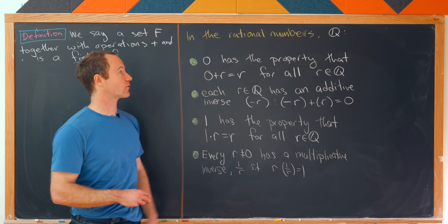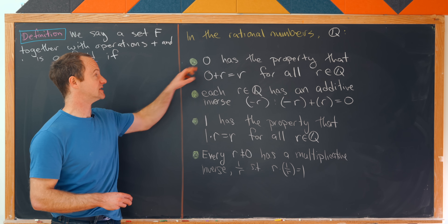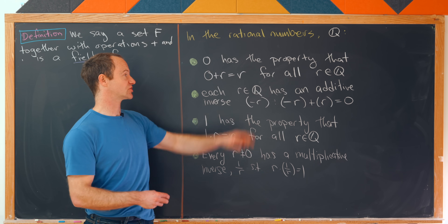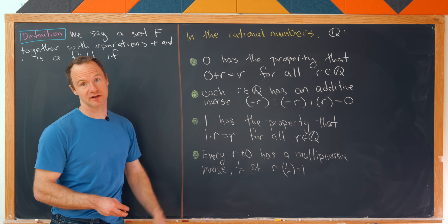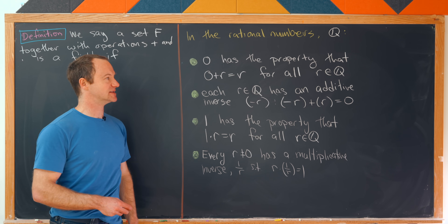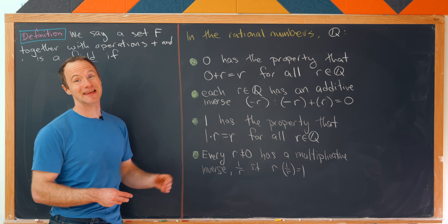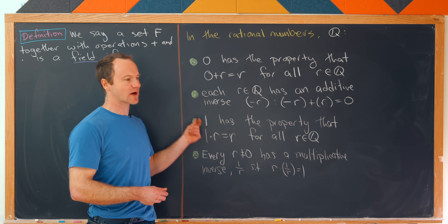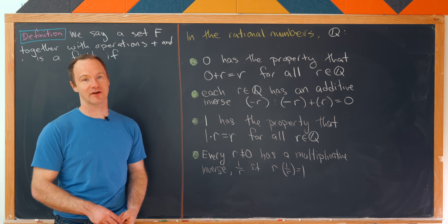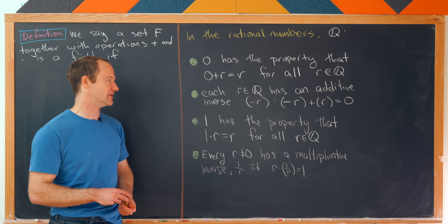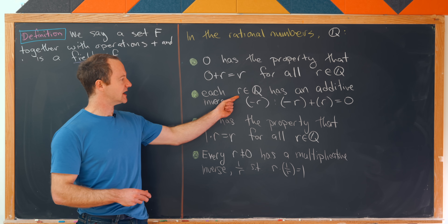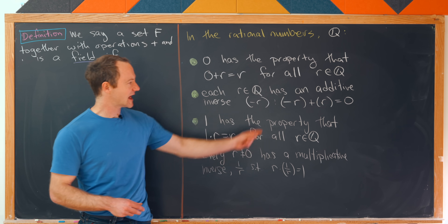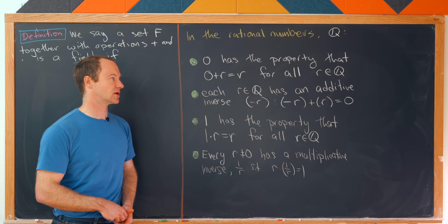In the rational numbers we have zero with the very special property that if we add zero to any rational number you get that rational number you started with. So that makes zero something called the additive identity. And then each rational number has a path back to the additive identity which I'll call its additive inverse. Each rational number r has an additive inverse which we'll call minus r, and that has the property that r plus minus r is equal to zero.